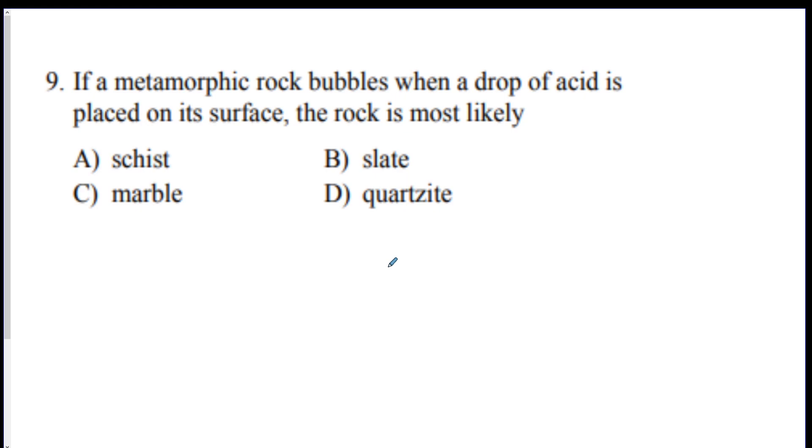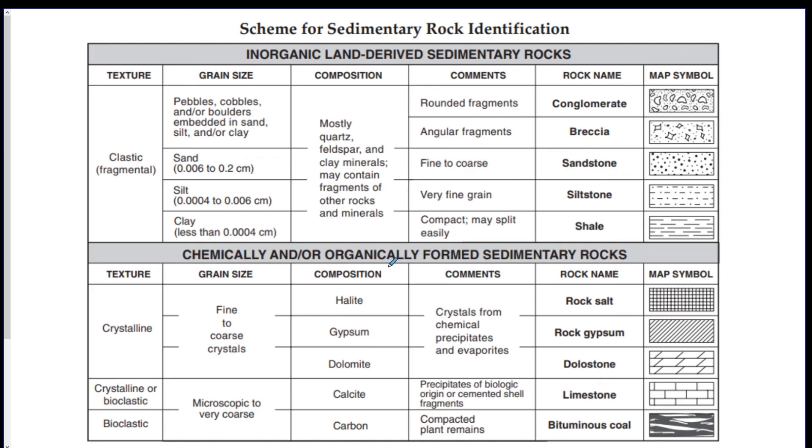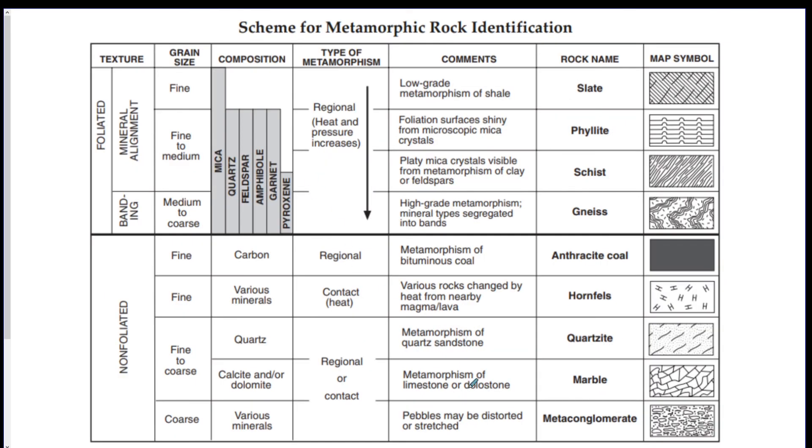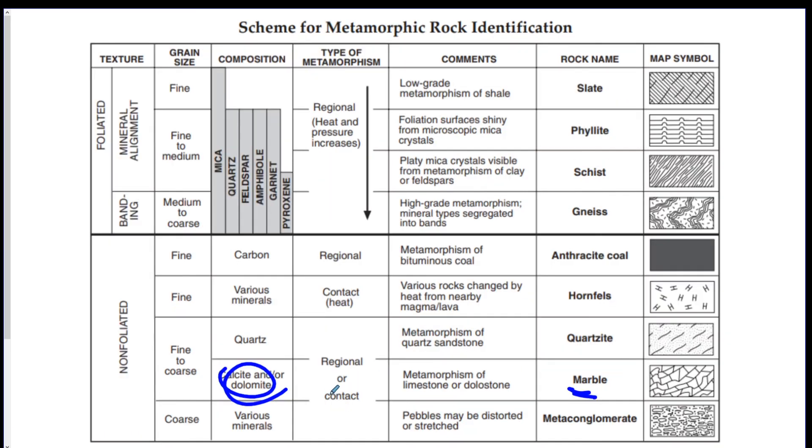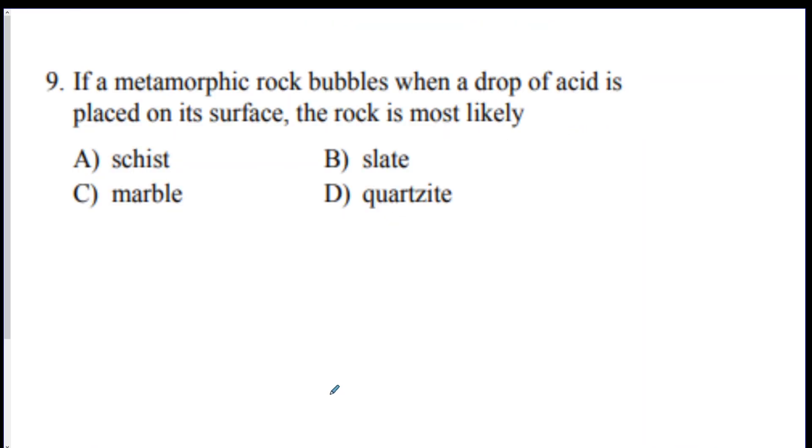Metamorphic rock bubbles when a drop of acid is placed on the surface. What is this rock? So, we've got to go to the metamorphic rock chart. Which one of these would bubble with acid? We said it. Oh, this is sedimentary. That's not right. Metamorphic. Marble. Because it has calcite. Calcite bubbles with acid. So, also, if they ask about sedimentary, limestone would bubble with acid because it has calcite. Alright. So, that looks like it would be C. That's the rock unit. I will see you on the next video. Good luck.